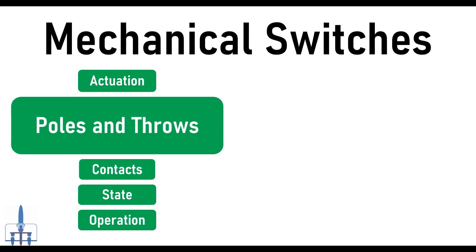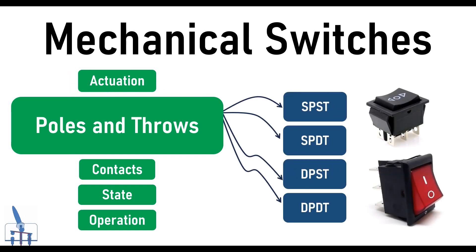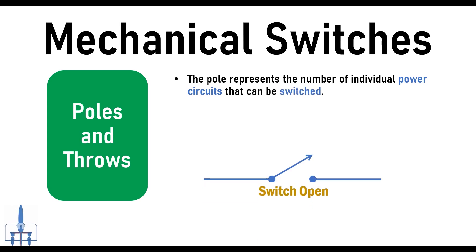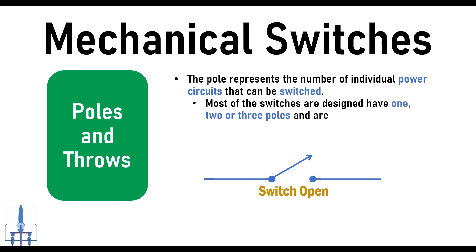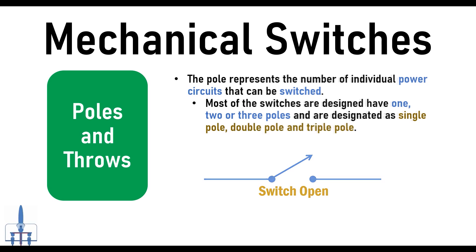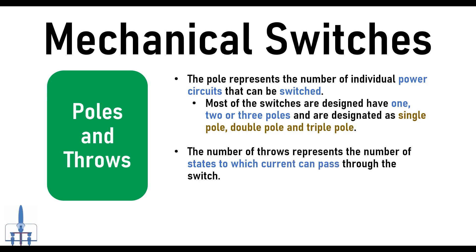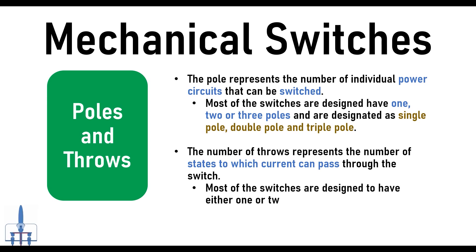Based on the number of throws and poles, switches are classified in the following types. The poles represent the number of individual power circuits that can be switched. Most switches are designed to have one, two, or three poles, designated as single pole, double pole, and triple pole. The number of throws represents the number of states to which current can pass through a switch. Most switches are designed to have either one or two throws, designated as single throw or double throw switches.